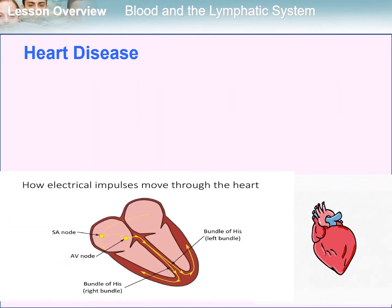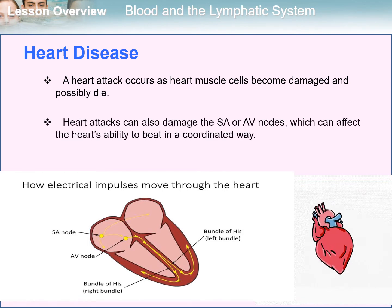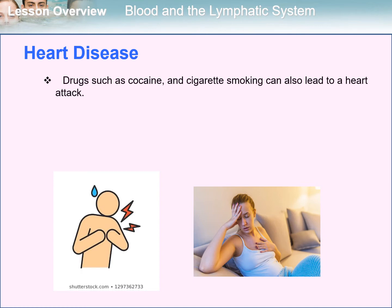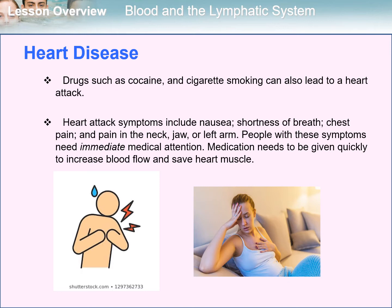How does a heart attack occur? A heart attack occurs as heart muscle cells become damaged and possibly die. Heart attacks can also damage the SA or AV nodes, which can affect the heart's ability to beat in a coordinated way. Drugs such as cocaine and cigarette smoking can also lead to heart attack. Heart attack symptoms include nausea, shortness of breath, chest pain, and pain in the neck, jaw, or left arm. People with these symptoms need immediate medical attention. Medication needs to be given quickly to increase blood flow and save heart muscle.